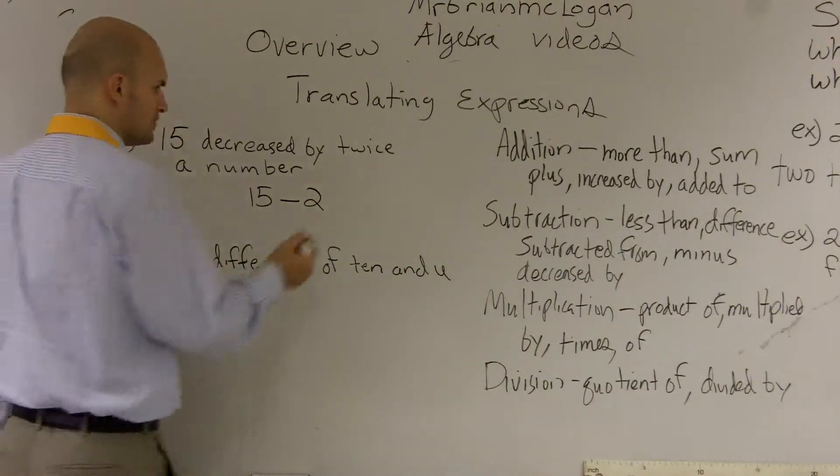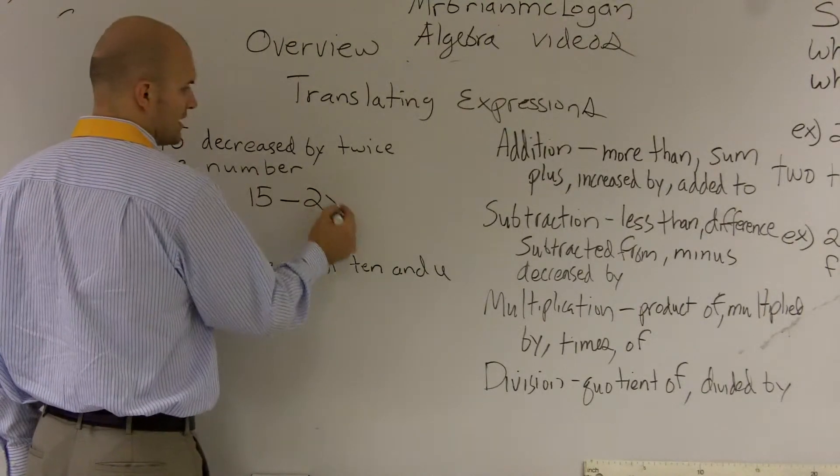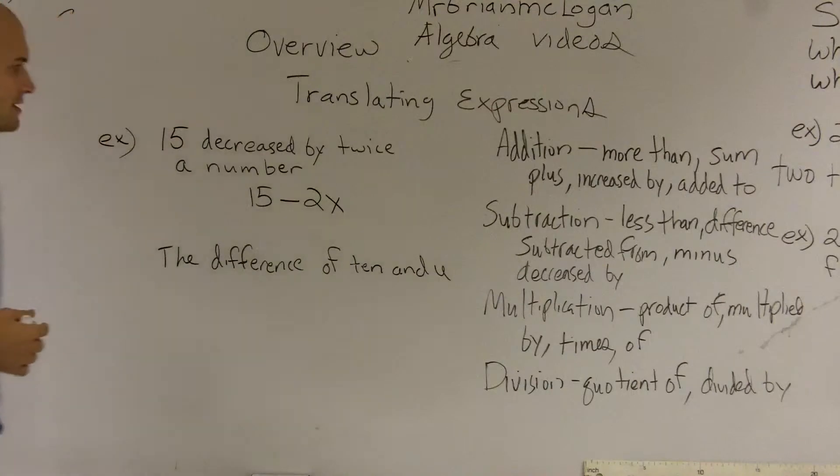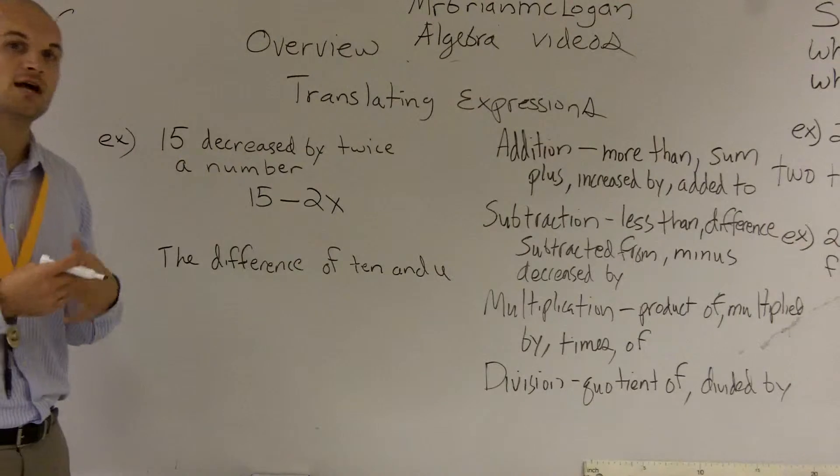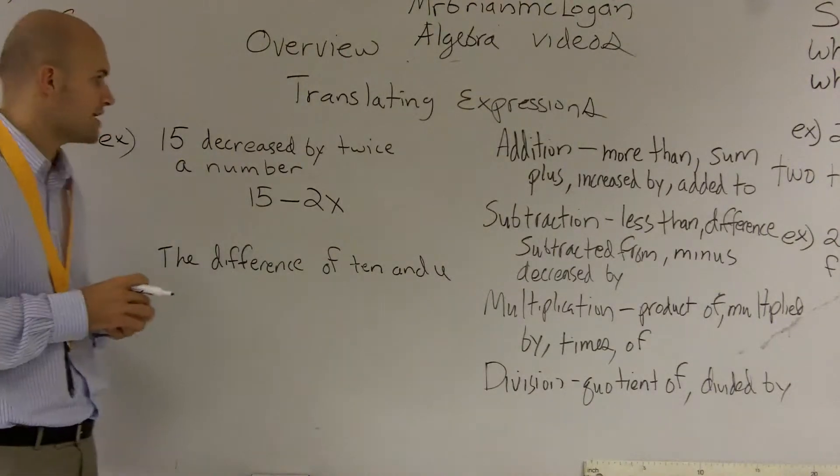So they say 15 minus and then twice a number. And they know twice usually—remember, that's multiplied by 2. They can write in any variable they want. Here, I'll choose x. Now, the reason why this is incorrect, and like I said, you've got to really be careful with the order that you're doing your subtraction.